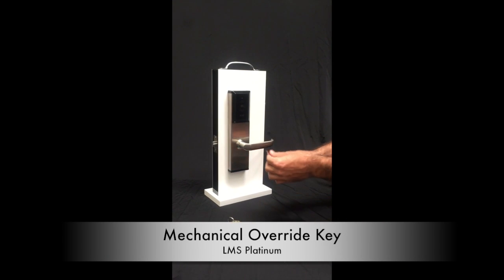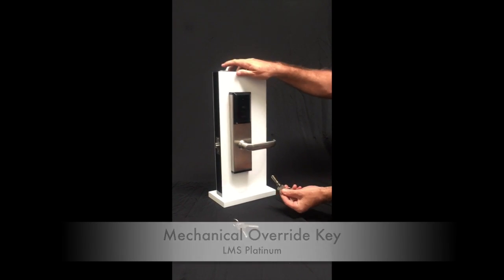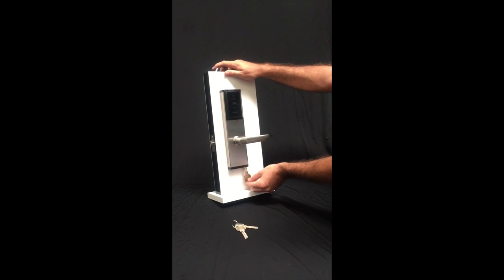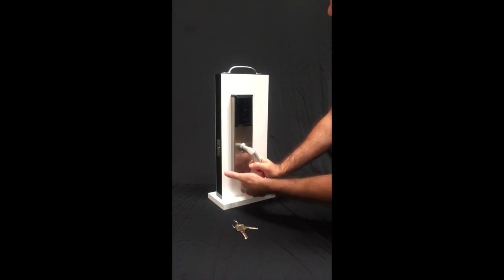This is a demonstration of how to use the mechanical override key for the LMS Platinum. You have the key and insert it in the cylinder on the bottom and push up firmly. Then you rotate the handle and the latch will go inside.